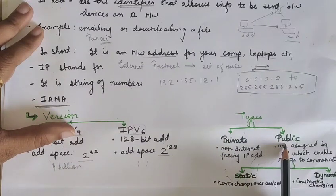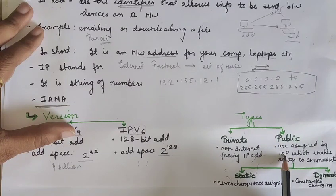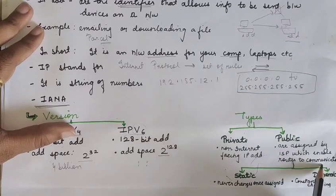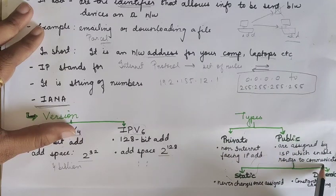Whereas public IP addresses, what is this? This public IP addresses are directly assigned by your internet service provider which enables your routers actually to communicate with the internet or outside our network which enable the router to communicate.